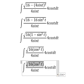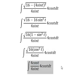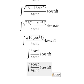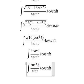The square root of this one equals 4 cosine t. Number 4 and number 4 we simplify. Cosine t and cosine t equals cosine squared t. Cosine squared over 4 we put outside.